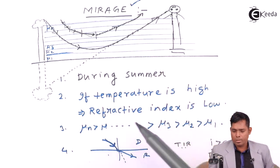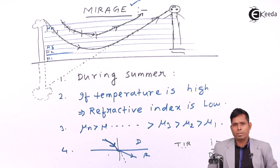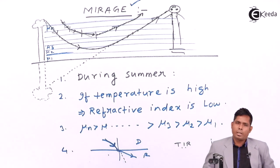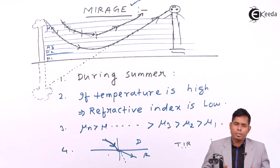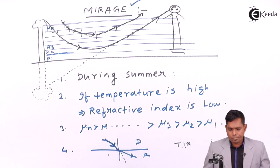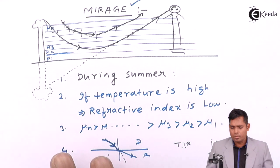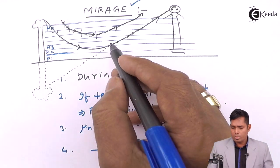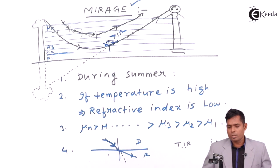This type of illusion, which gives you the feeling of the presence of water at a distant place during summer or whenever the surface is very hot, is known as Mirage. As you move from the ground upward, the temperature decreases and density increases, causing total internal reflection. This is the concept of Mirage.